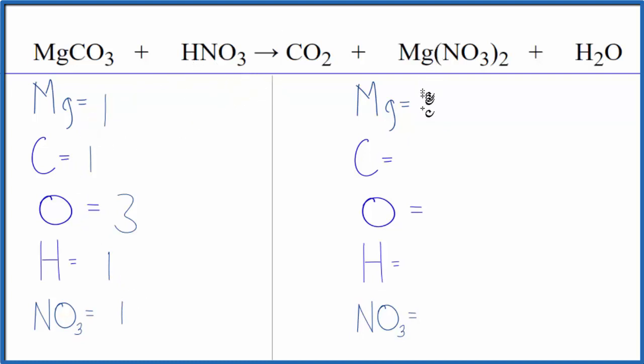On the product side, I have one magnesium, one carbon, two oxygens plus this one, three. I have two hydrogens, and then I have two of these nitrate ions. I'm going to put a two here.